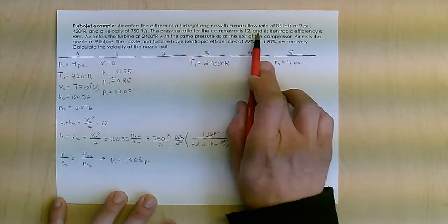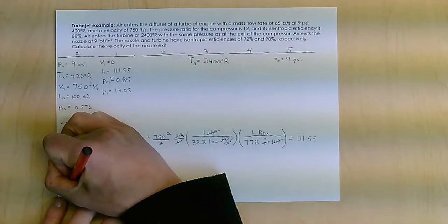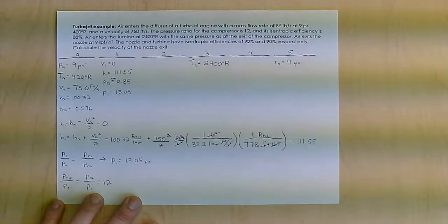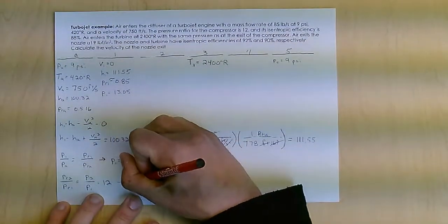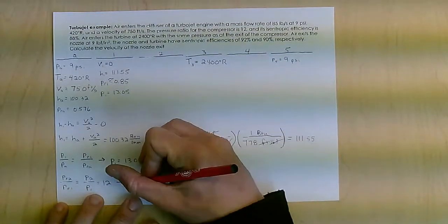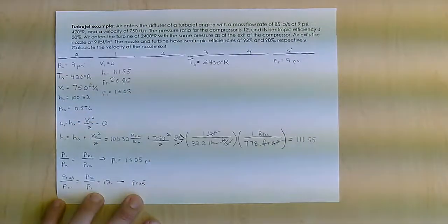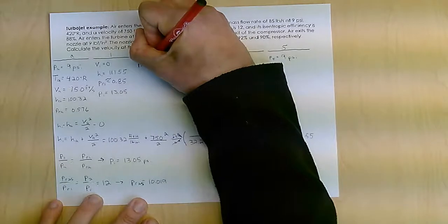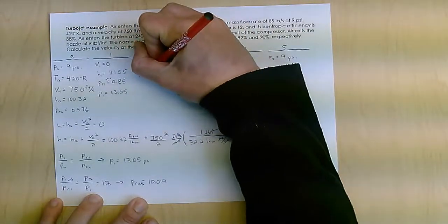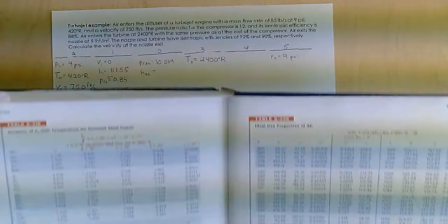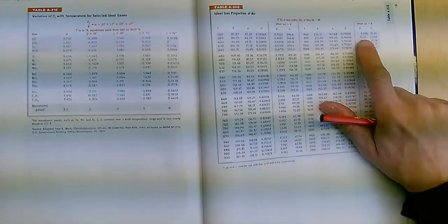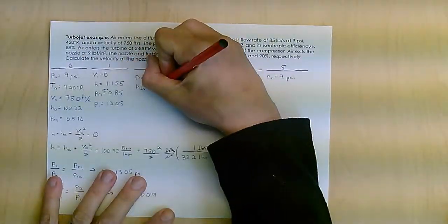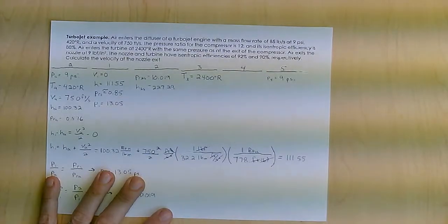So P1 equals 13.05. And again, that's doing this pressure ratio equivalent to that pressure ratio. Again, that's an approximate. You can do the interpolation yourself to get the exact value. So that gives me state 1. Now, state 2, I have the compressor ratio of 12, which means that PR2 over PR1 equals P2 over P1, which equals 12. Therefore, I can calculate PR2 equal to, and this is actually PR2S because this is an isentropic process. And I've got an efficiency, so I need to find that first, and that's 10.019. So PR2S is 10.019 gives me an H2S equal to, pretty much just 10, can scroll down, and I get H equals 227.29.